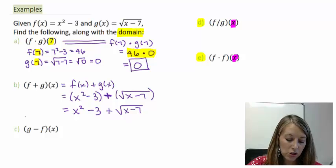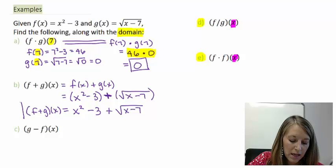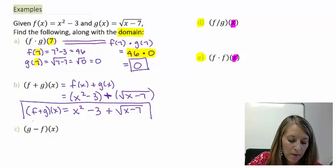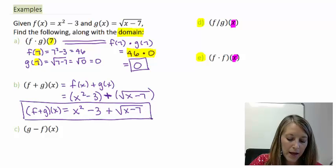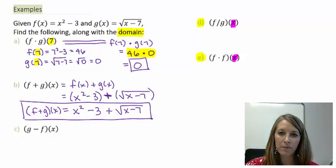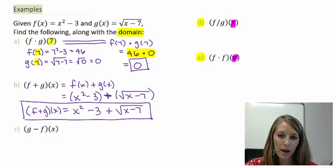I cannot combine square roots unless they are like terms, which I do not have here. So my most simplified version of this f plus g of x is x squared minus 3 plus the square root of x minus 7.